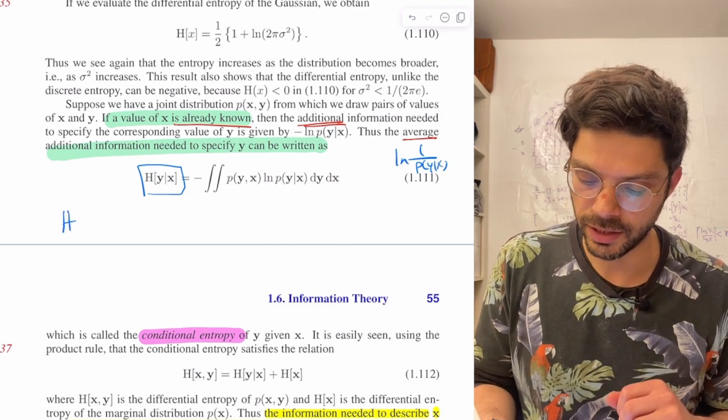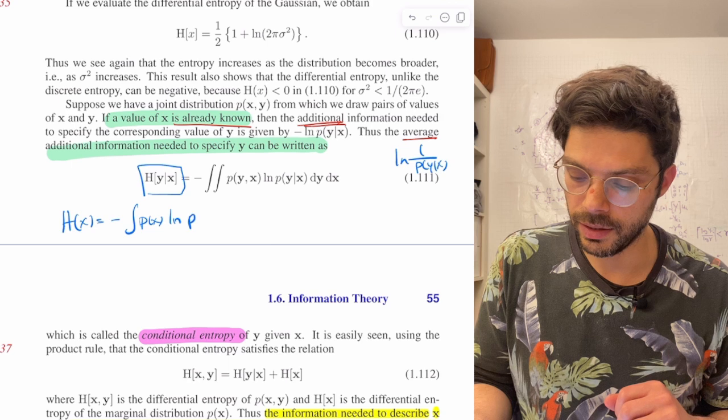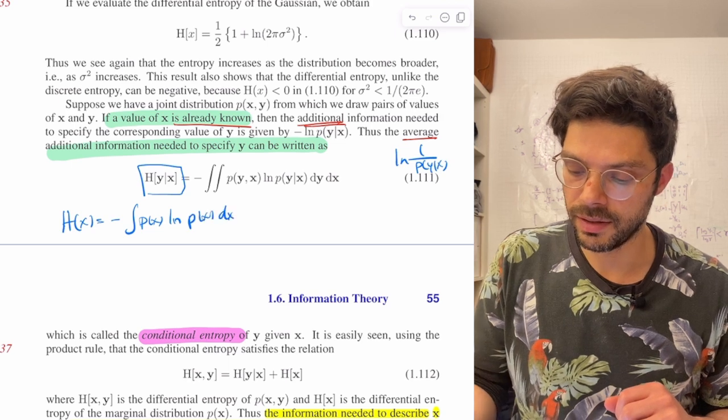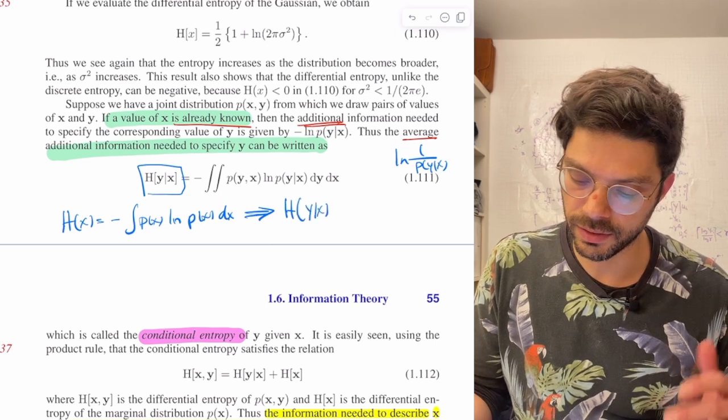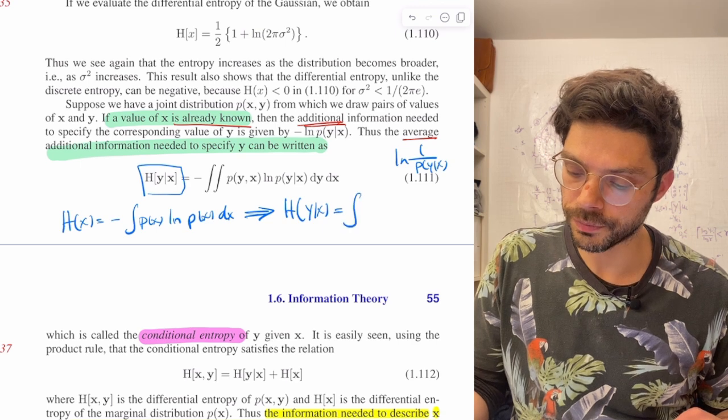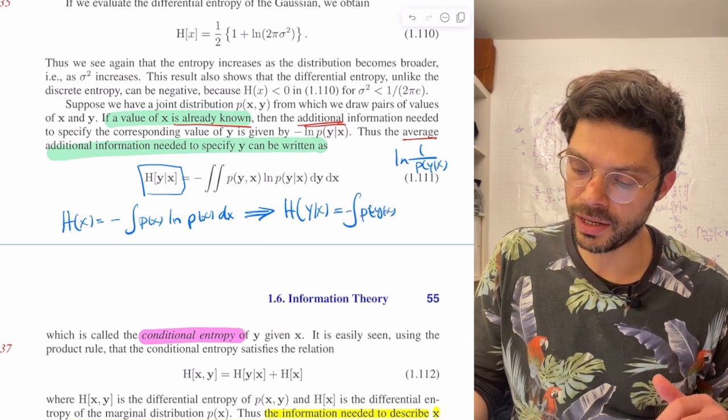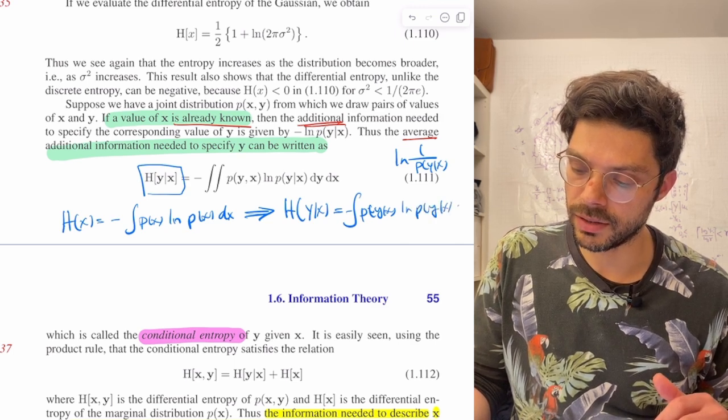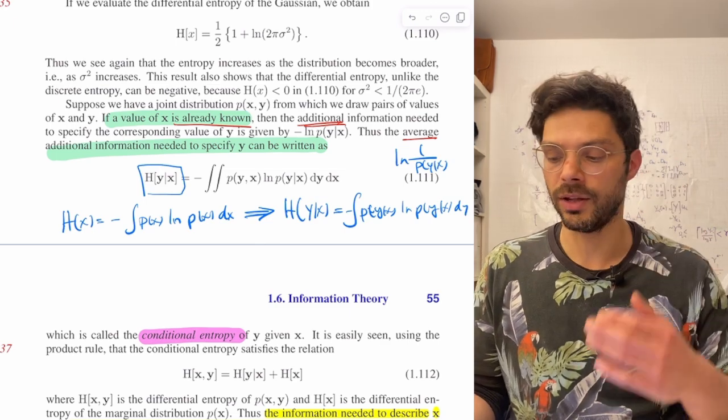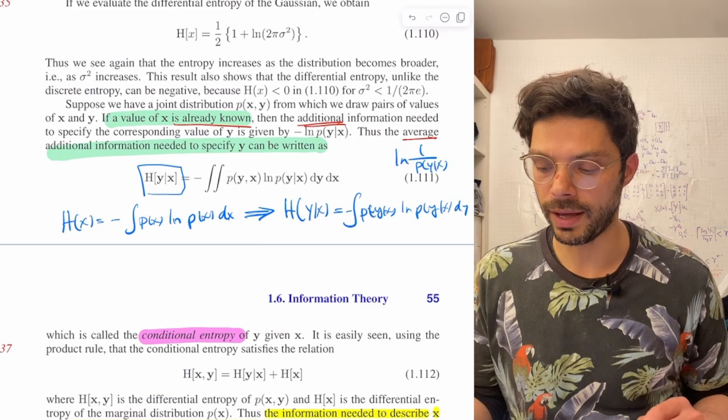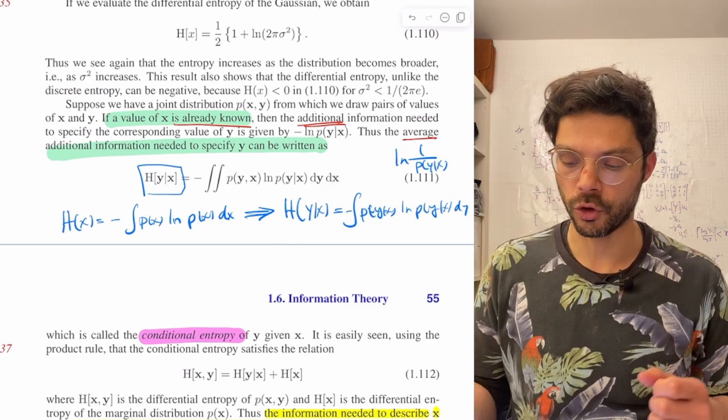So this does not equal p of y given x. This notation I find a little bit confusing all the time, because you might think that since h of x is minus p of x ln p of x dx, this implies, just notationally, that h of y given x is equal to minus p of y given x ln p of y given x dy. But that is actually not the case.